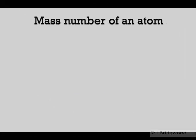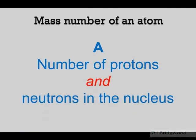The second number is the mass number of an atom, symbol A. This describes the number of protons and the number of neutrons in the nucleus. In other words, the number of nucleons present in the atom.